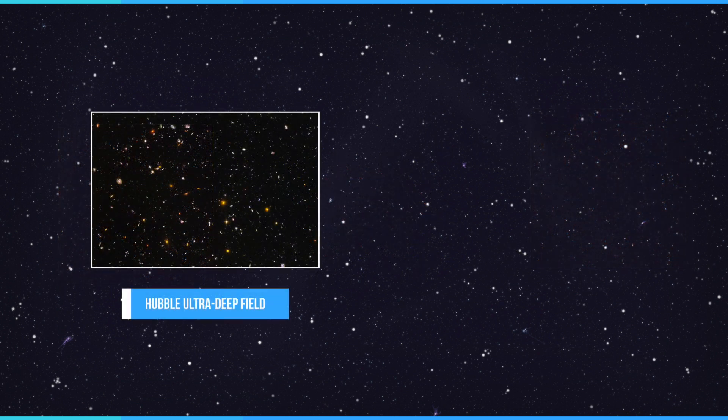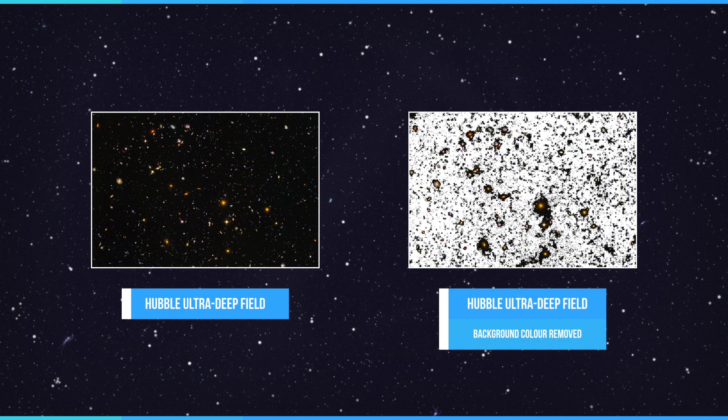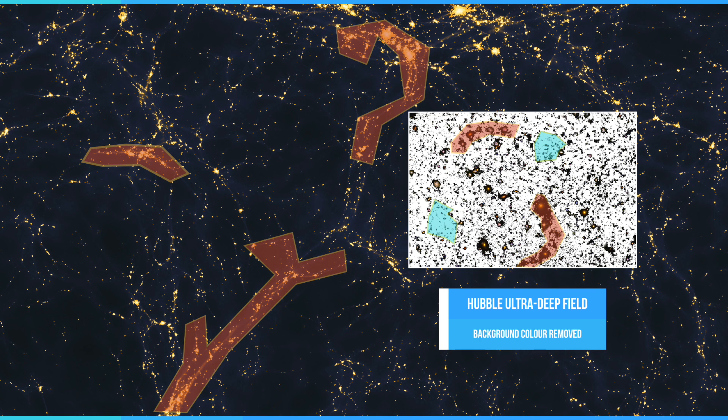When astronomers mapped the positions of millions of galaxies, they saw that they were not scattered randomly through space, but followed patterns. Galaxies mostly lie on the surface of many bubbles, in a kind of cosmic foam.